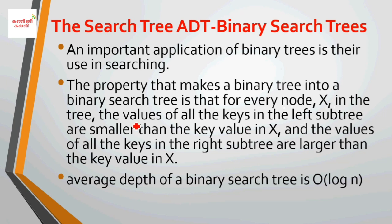the values of all the keys in the left subtree are smaller than the key value of x. The values of all the keys in the right subtree are larger than the key value of x. When this property is satisfied, the binary tree becomes a binary search tree.